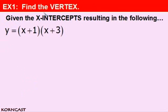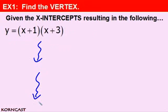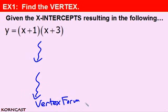In Example 1, we're going to be asked to find the vertex. In the previous corncast, we were given x-intercepts and were able to find the equation that went through them. So we're going to be given the x-intercepts, resulting in the following equation. Since we're asked to find the vertex, we need to work our equation into vertex form, because we can easily get the vertex from looking at that equation.